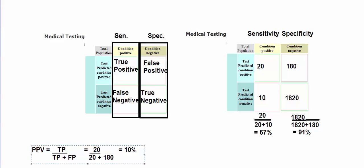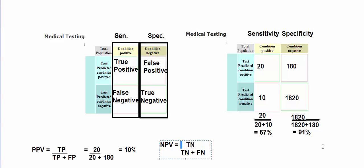This means 90% of people in the waiting room who were told they had the condition were actually fine — a false positive. That's helpful information to know when you're making decisions. Negative predictive value, NPV, looks at true negatives over all negatives — true negatives plus false negatives. For our example, we had 1,820 true negatives out of 1,820 true negatives and 10 false negatives.